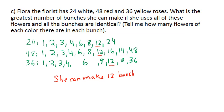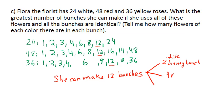Now I need to know in every bunch how many white flowers, red flowers, and yellow roses. If I have 12 bunches and all the white are 24, so 2 in every bunch — I have 2 white roses in every bunch. If I have 48 red and 12 bunches, so I have 4 red, and I have 3 yellow in every bunch.